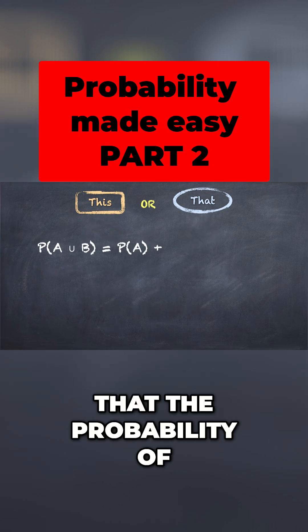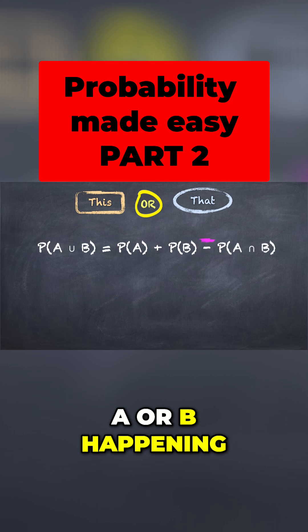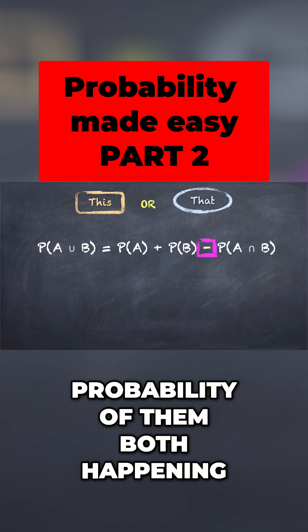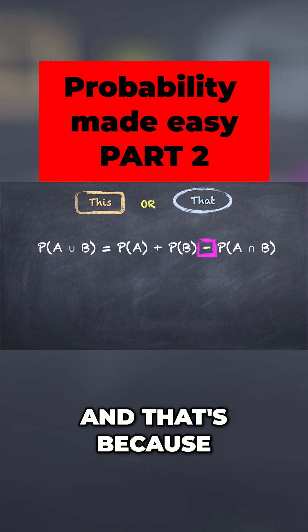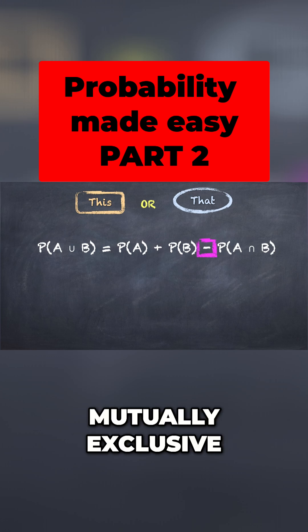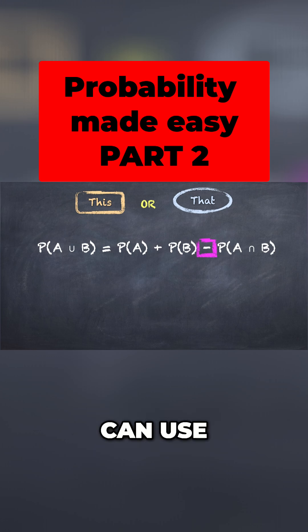So the rule here is that the probability of A or B happening, so either event can happen to meet the criteria, is given by adding them together and then subtracting the probability of them both happening. And that's because of our double counting. Now this formula is what we use when they're not mutually exclusive. I will tell you that you can use this.